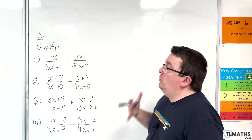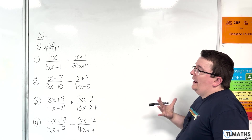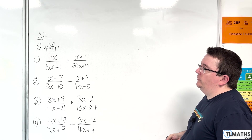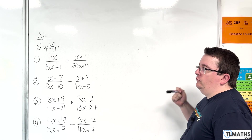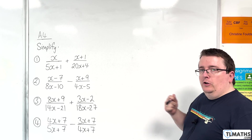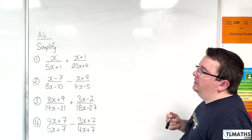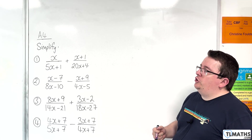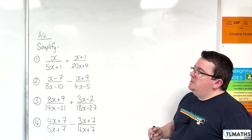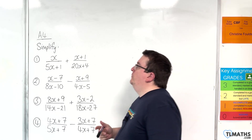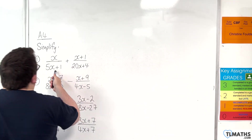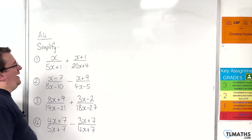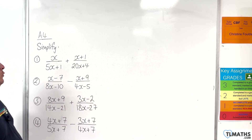In this video, we want to add or subtract algebraic fractions. Remember, we are on the lookout to see whether we can shortcut using cross multiplication. First one: we've got x over 5x plus 1, plus x plus 1 over 2x plus 4.